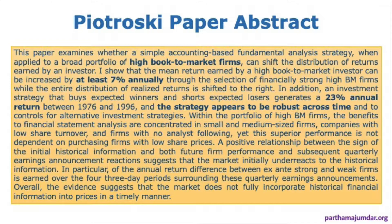The abstract further reads: the mean return earned by a high book-to-market investor can be increased by at least 7% annually through selection of financially strong book-to-market firms, while the entire distribution of realized returns is shifted to the right. In addition, an investment strategy that buys expected winners and shorts expected losers generates a 23% annual return between 1976 and 1996. A few things are very significant here. The paper discusses value stocks and shows that buying expected winners and shorting — selling — expected losers can generate 23% extra returns.